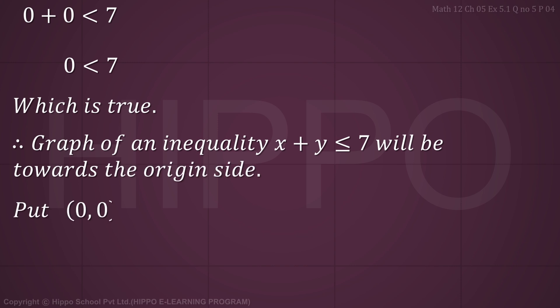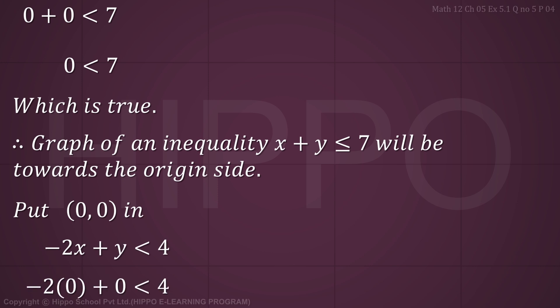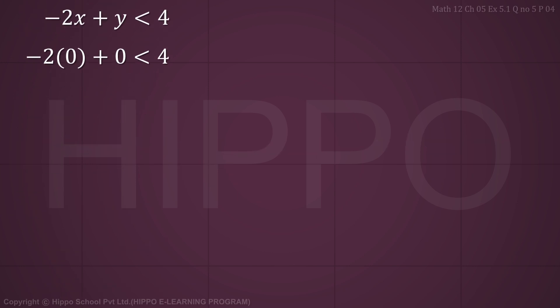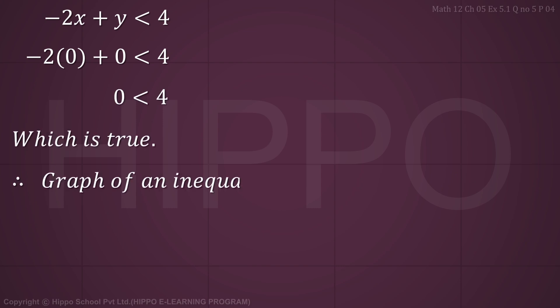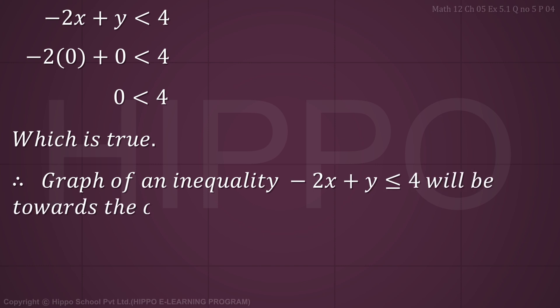Put (0, 0) in minus 2x plus y less than or equal to 4: minus 2 times 0 plus 0 equals 0, which is less than 4 — this is true. All three inequalities are satisfied by the origin. So the graph of minus 2x plus y less than or equal to 4 will also be towards the origin side.